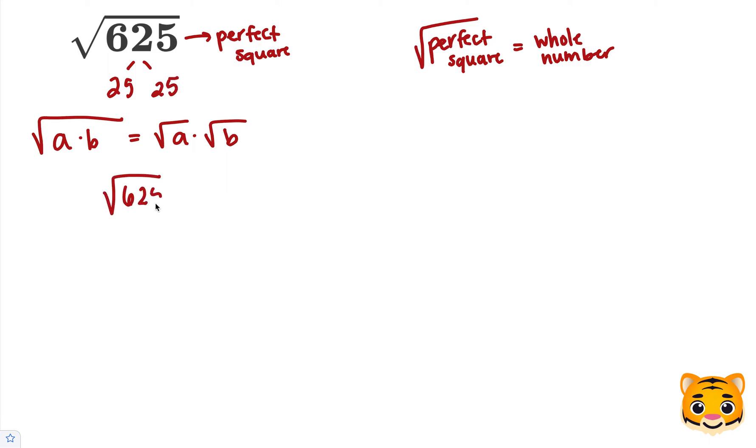We can write the square root of 625 as the square root of 25 times 25, and then use our math rule to break this up into the square root of 25 times the square root of 25.